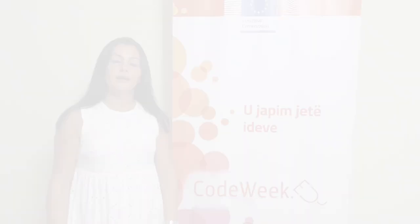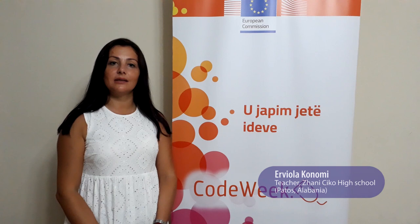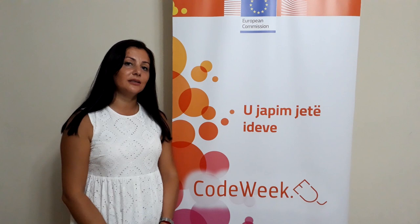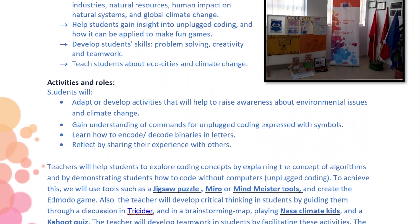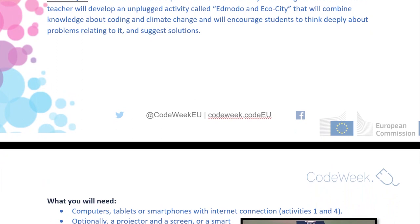Teachers can use the Sustainable Development Goals in the classroom as a tool for students to develop their critical thinking, but also to help them find their identity and purpose. In this activity, students will learn about how to take action to combat climate change. Students will use classroom materials to create games using unplugged coding, while working in teams and developing their critical thinking skills and active citizenship.